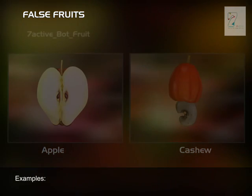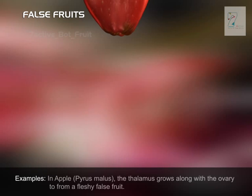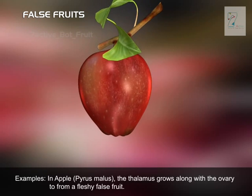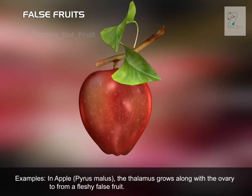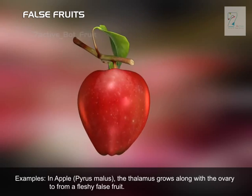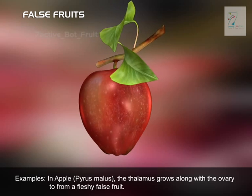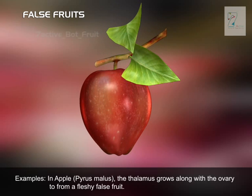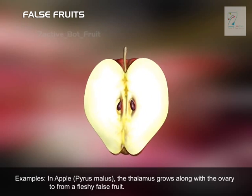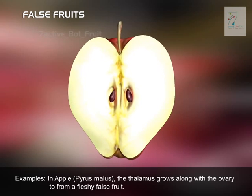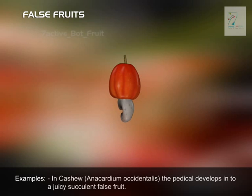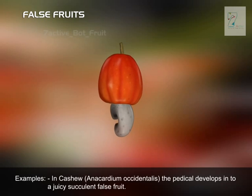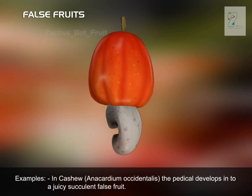Examples: In apple, Pyrus malus, the thalamus grows along with the ovary to form a fleshy false fruit. In cashew, Anacardium occidentale, the pedicle develops into a juicy succulent false fruit.